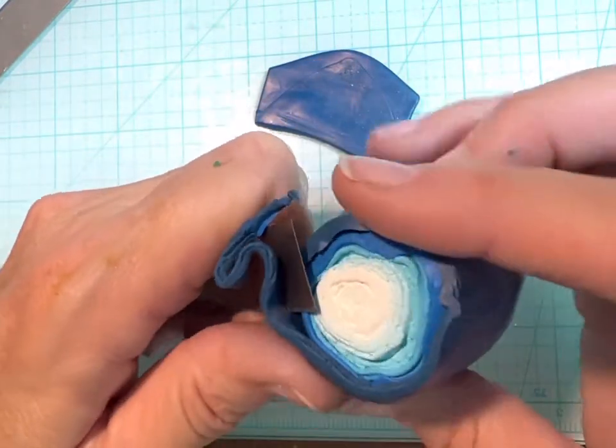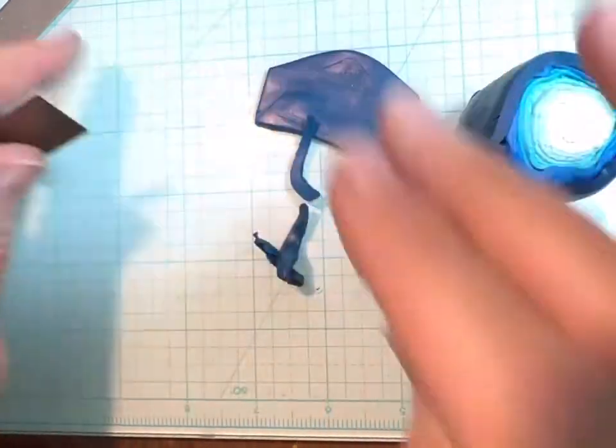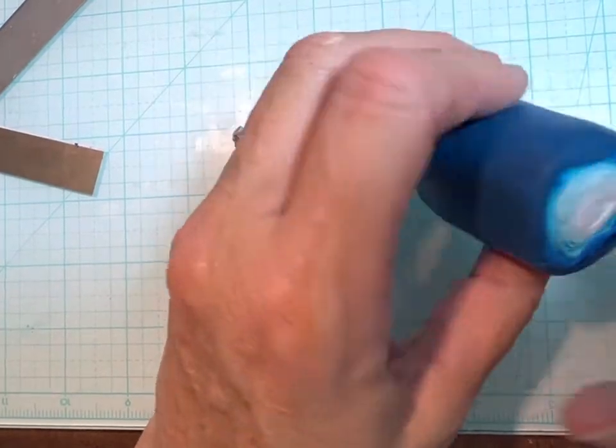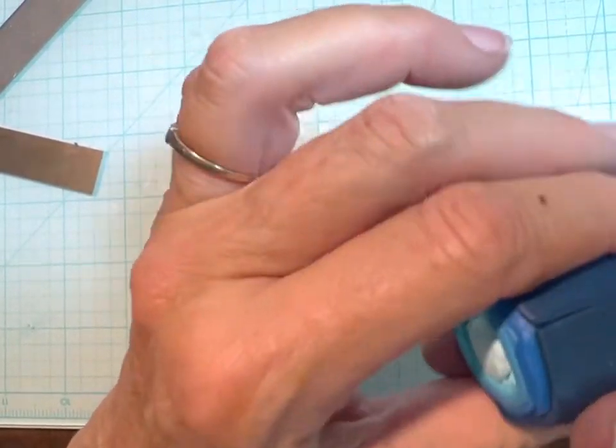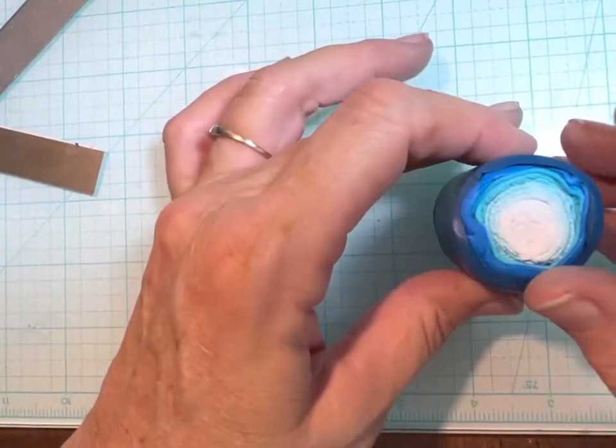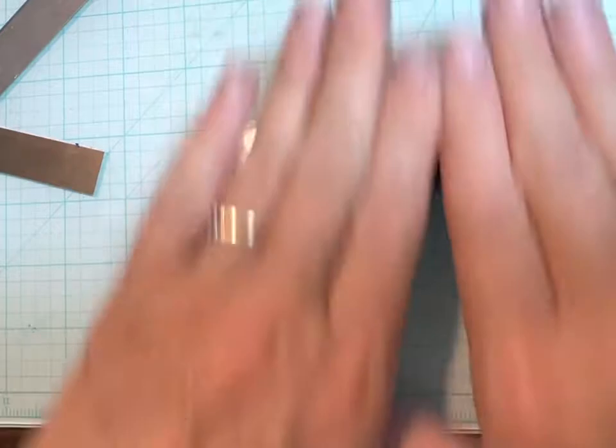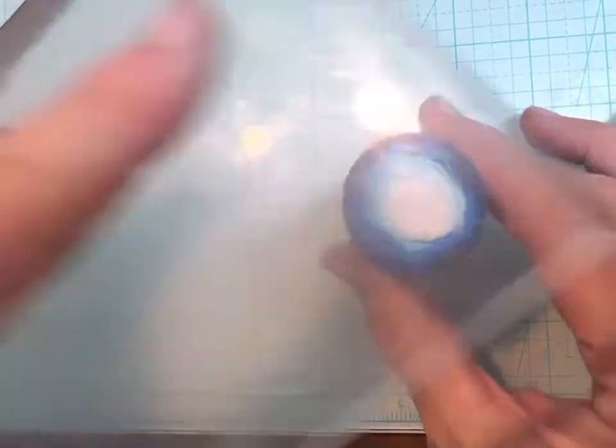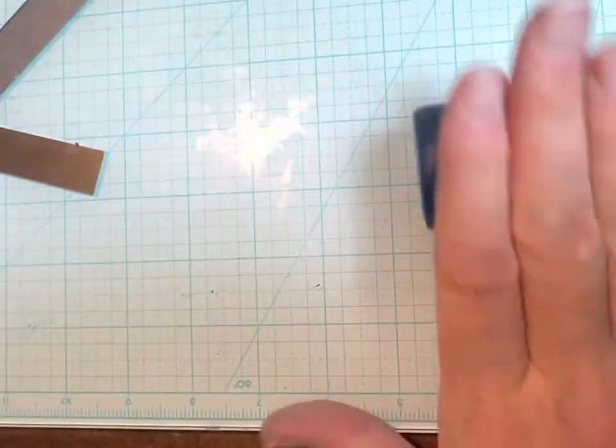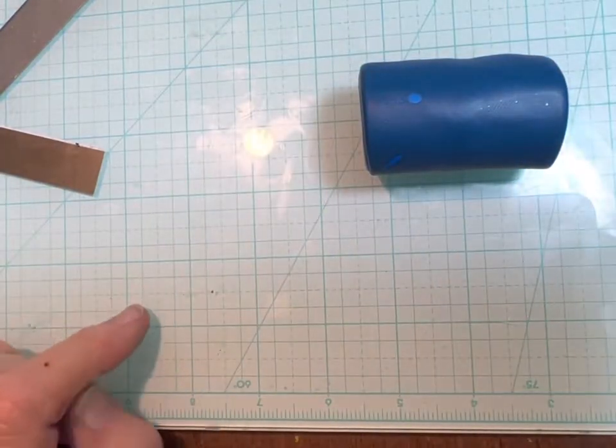The next step is going to be to reduce this into a length where I can chop it into three pieces. It's easiest to do these, the bullseyes are one of the easiest ones to reduce because you can literally just roll it out. I do however periodically smoosh it down, official term, so that it doesn't get too distorted, and then I keep rolling. I'm going to come back when it's a little bit longer and we can chop it in three pieces and go to the next part.